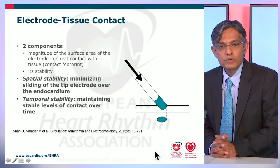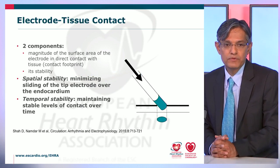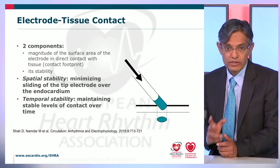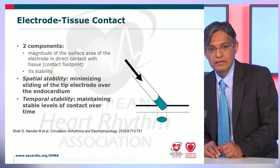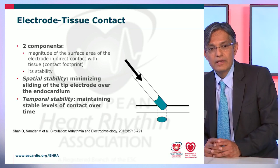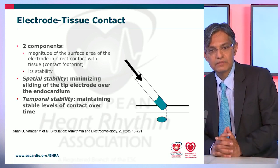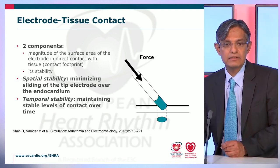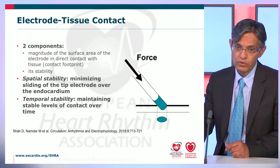If you look at electrode tissue contact conceptually, one can think of it as being made up of two components: the magnitude of the surface area of the electrode in direct contact with the tissue — the so-called contact footprint — and its stability. That stability can be considered in two ways: spatial stability, such as minimizing sliding of the tip electrode over the endocardium, or temporal stability, maintaining stable levels of contact over time. Both of these are very important.